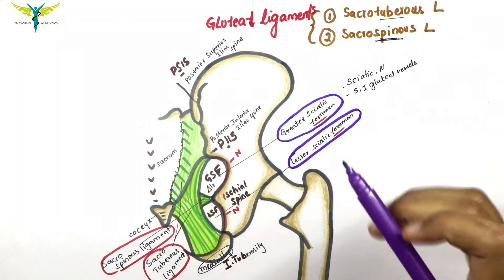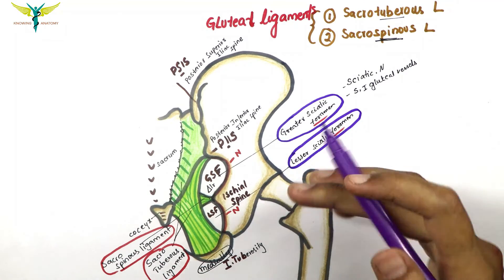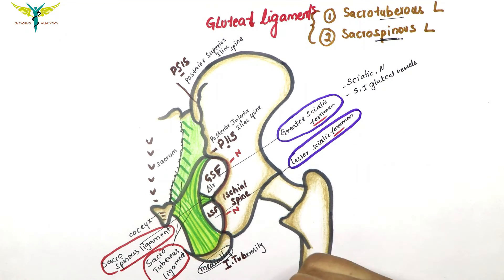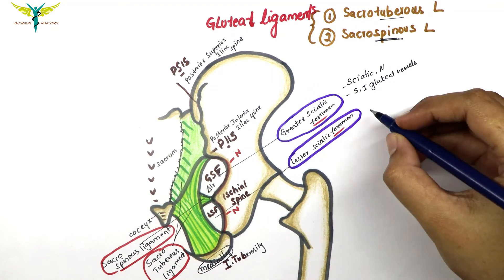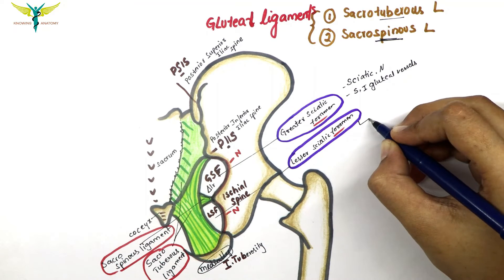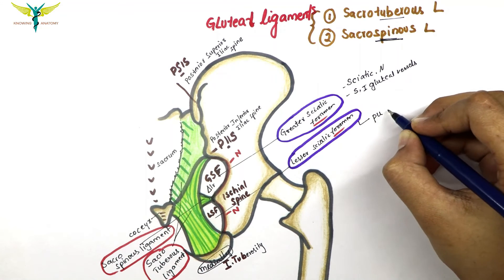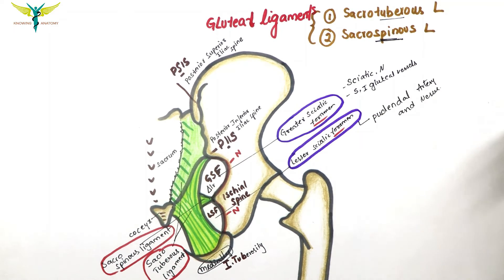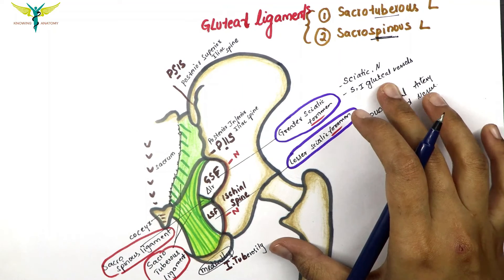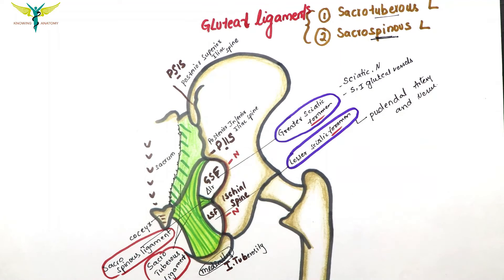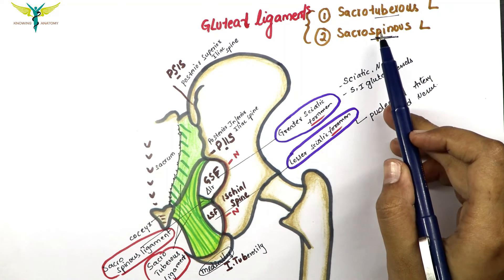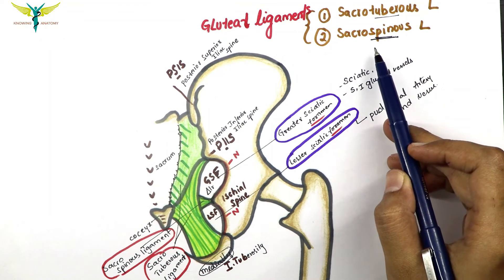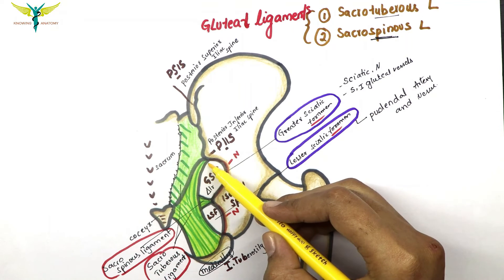From the lesser sciatic foramen, it is a pathway for structures which enter the perineum. The perineal structures passing through it are the pudendal artery and the pudendal nerve. This covers the gluteal ligaments — the sacrotuberous and the sacrospinous ligament.